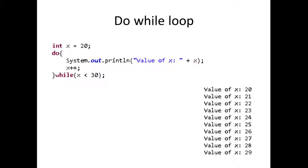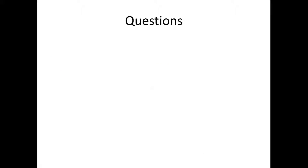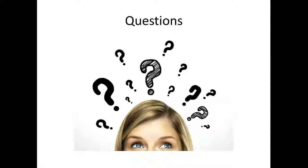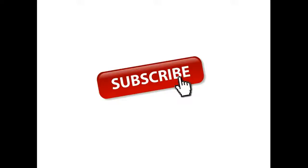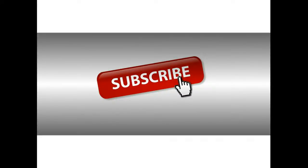Pretty simple. This is pretty much it as far as explaining the key differences between the do-while loop and the while loop. If you have any questions, leave them in the comments below. Don't forget to like the video if you've learned something from here, and also don't forget to subscribe. See you in the next one.